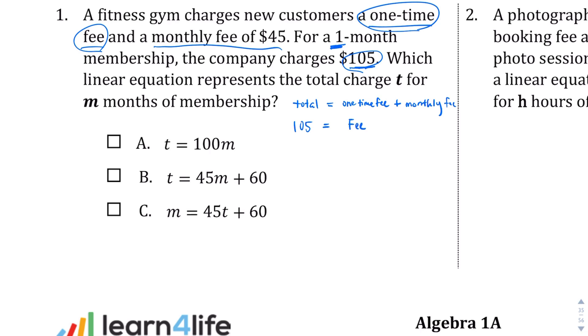And then for the monthly fee, we know that we're going to get charged $45 a month. And in this case, we got charged for one month. But since the number of months is the thing that's changing, I'm just going to use a variable M just to keep things straight. So we have this. It should kind of look something like this.